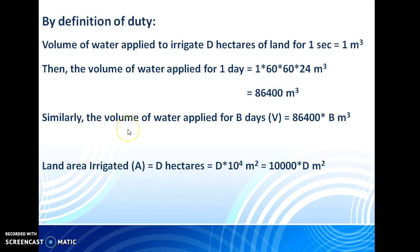Then, how much volume of water is required for irrigating D hectares in B days? The volume of water applied for B days, let us consider V, that is equal to 86,400 times B meter cube. This is the total volume of water required to irrigate the land in B days.